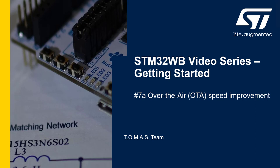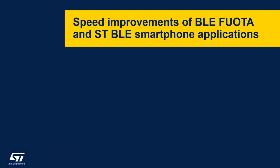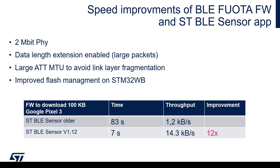I would like to show you a series of quick demonstrations that highlight the latest improvements in the WB ecosystem. I would like to start with the speed improvement of firmware upgrade over the air. There has been enhancement both in the BLE OTA application which runs on WB and also on the OTA client side, which is the BLE sensor application that runs on a smartphone or CubeMonitor RF which runs in conjunction with a WB dongle and a transparent mode.